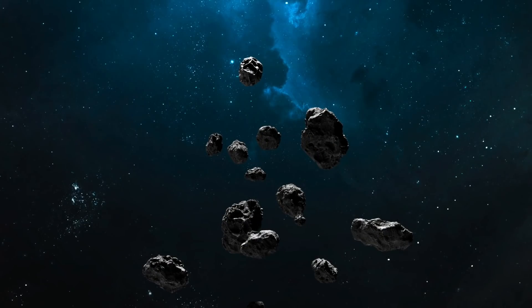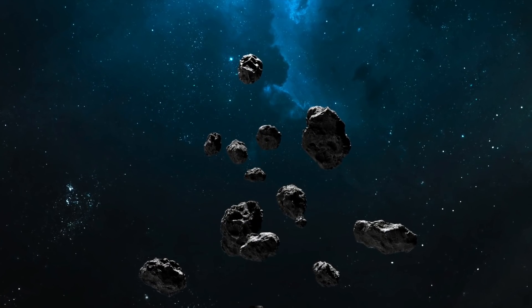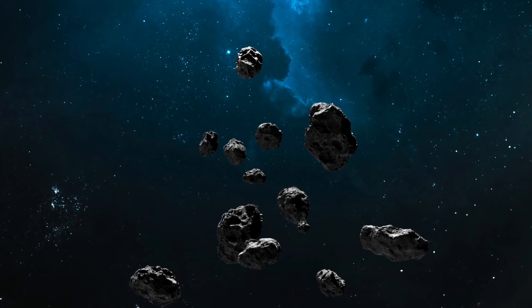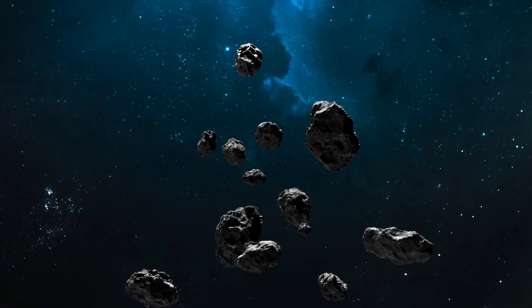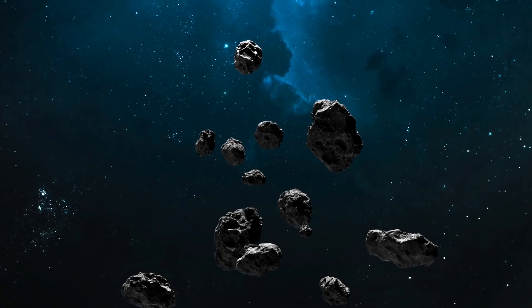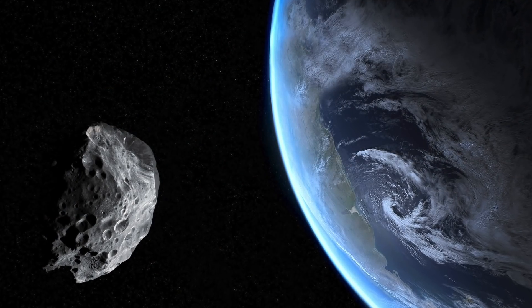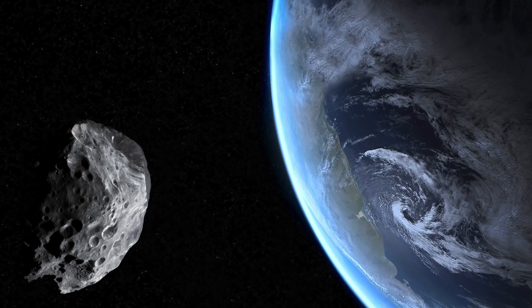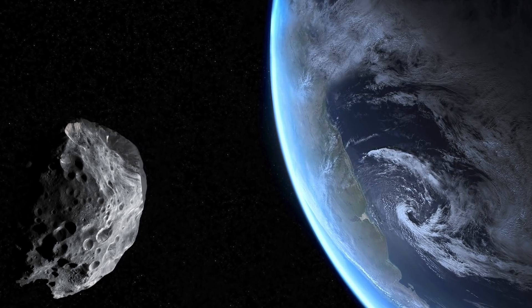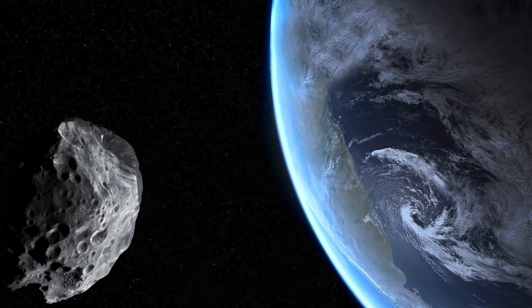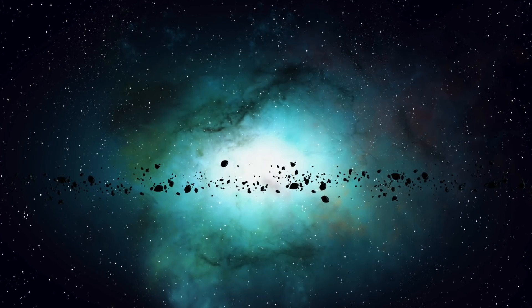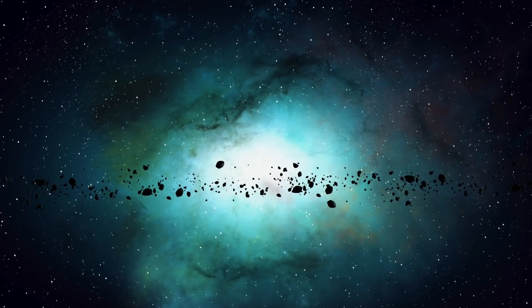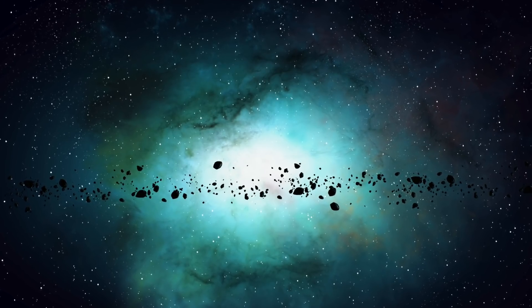There have been many previous attempts to find Earth trojans. Toni Santana-Ros, one of the authors of the new publication, said to press all the dedicated efforts had so far failed to discover any new members of this population. Spotting Earth trojans is surprisingly difficult because of their distance to the sun. The window of opportunity to spot them is very small. It is only around sunrise that we can try to catch a glimpse of them.